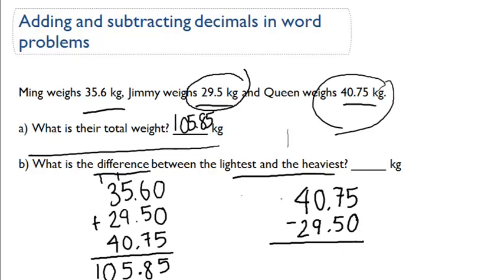All right, now we can do our subtraction. 5 minus 0 is 5. 7 minus 5 is 2. Bring down our decimal place. 0 minus 9. Oh, we can't do that. Going to cross that out and borrow 1. So 10 minus 9 is 1.